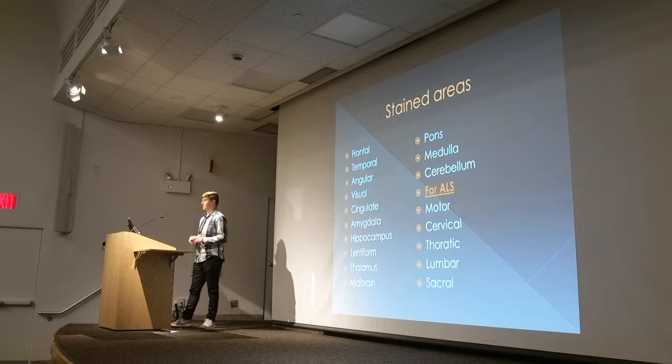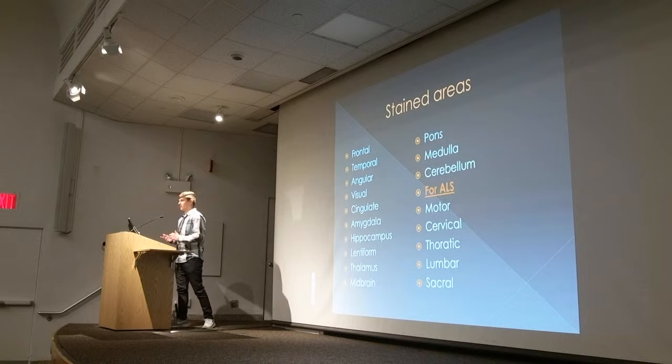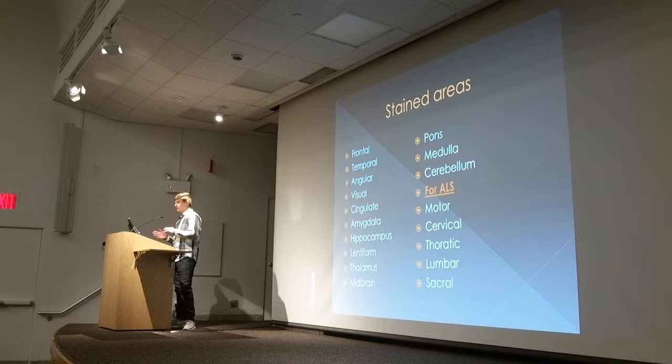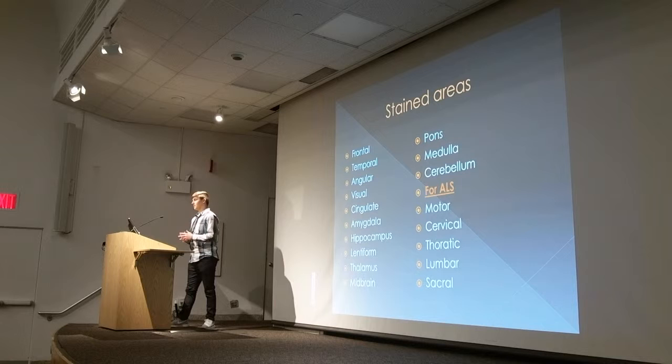The areas that we stain, no matter what, for all cases, are the frontal, temporal, angular, visual, insular, and cingulate cortex, caudate, putamen, basal ganglia, and brain stem. And if it's an ALS case, we stain all those, plus the motor cortex and the spinal cord. We usually get 75 to 100 cases per year.